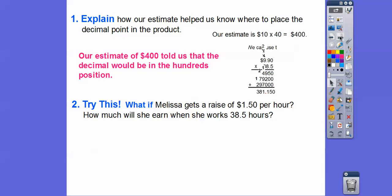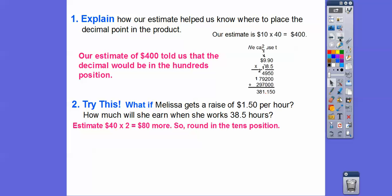Explain how our estimate helped us know where to place the decimal point in the product. Our estimate was 400, so that told us to put the decimal so it went to the hundreds spot — here's 381, and then this is the change, the 15 cents. What if Melissa got a raise of $1.50 per hour? How much would she earn working 38.5 hours? Since it's the same number of hours, I'll do $1.50 times 38.5 and then add that to $381.15. So let's estimate: $1.50 is close to $2, and $40 times $2 is $80 more — so we round to the tens position. $2 is quite a bit more than $1.50, so it'll be less than 80, probably in the 50s or 60s. We know to round to the tens position because this says 80 — 8 tens.